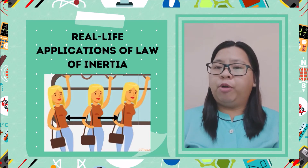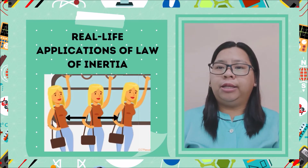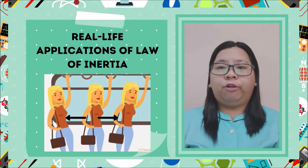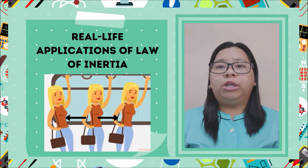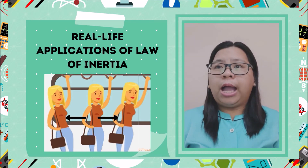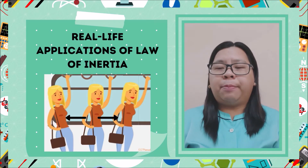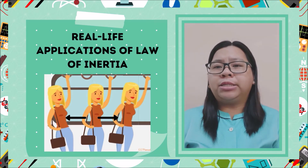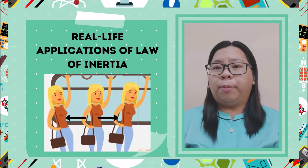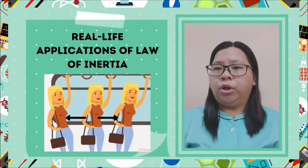Sa simula, dahil hindi pa umaandal ang tren, ang kanyang katawan ay nasa state of inertia pa. Ngunit nung ito'y magsimula ng gumalaw, ang kanyang katawan ay nagsimula na rin sa pagkilos. Dahil sa paggalaw ng tren, maaaring bumagsak ang kanyang katawan patalikod.